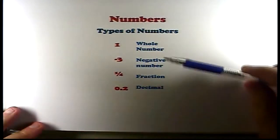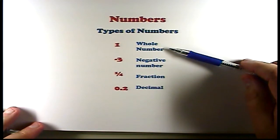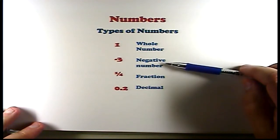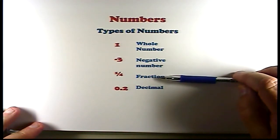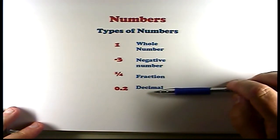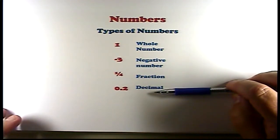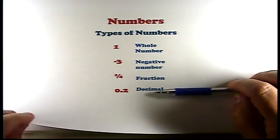There's many types of numbers. For instance, there's a whole number, like one, two, three, four, five, for example. Then there's negative numbers, minus one, minus two, minus three, etc. Then there's a fraction, like one-quarter, one-half, one-eighth, one-sixteenth. And then there's a decimal number, which is like 0.2, 0.3, etc.